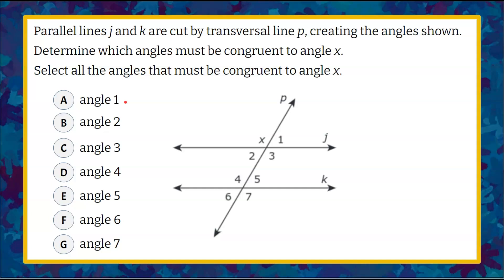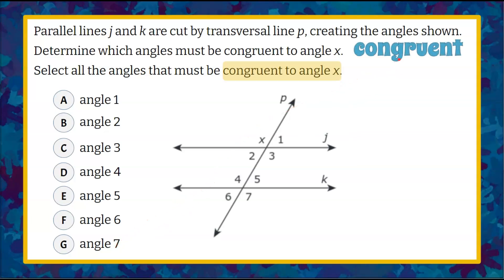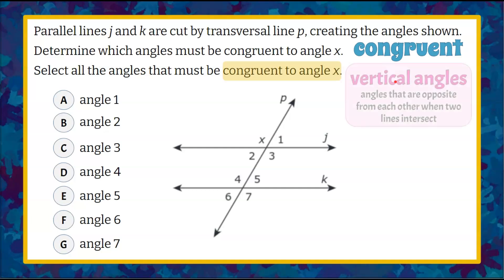Welcome back. So we have to determine angles that are congruent to angle X from this list of seven angles. Let's begin by going over congruent pairs of different types of angles formed by parallel lines and a transversal.